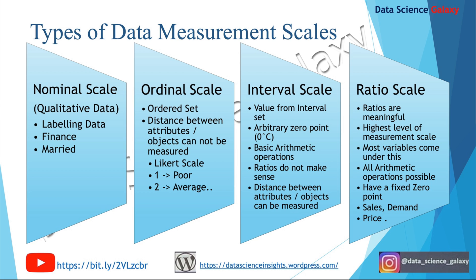Let's move on to interval scale. Here the variable gets its value from a defined interval set. Examples include IQ score and temperature measured in degrees Celsius. An arbitrary zero point is applicable and basic arithmetic operations are possible; however, ratios do not make sense. For example, I cannot say an object at 60°C is twice as hot as one at 30°C — that doesn't make sense. However, I can say it is 30°C more than 30°C. Distance between attributes can be measured.